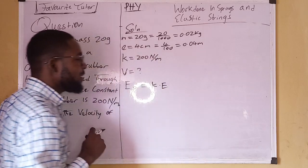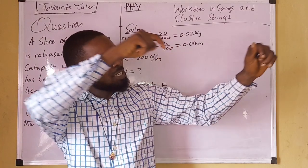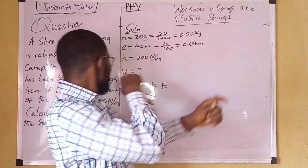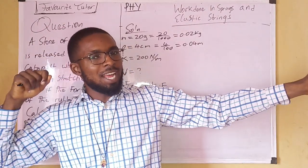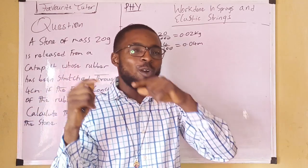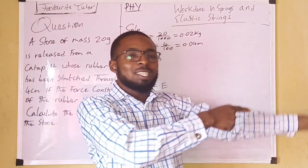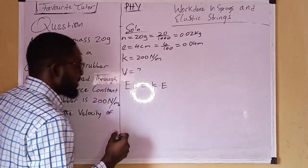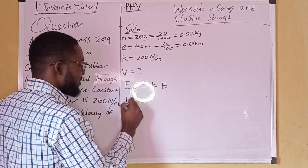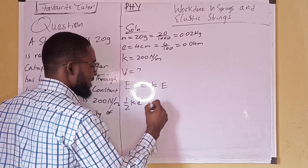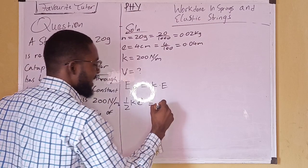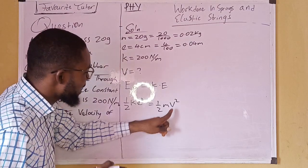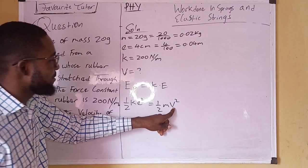We have the stone at the stretched position in the catapult, and when we release it, the elastic potential energy is converted to kinetic energy. The elastic potential energy is ½kx², and the kinetic energy is ½mv². We are looking for the velocity v.